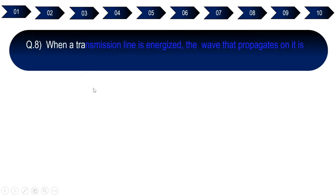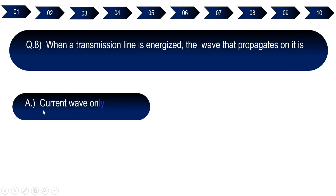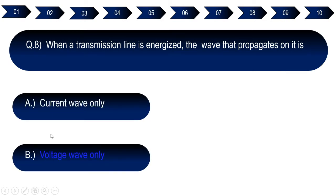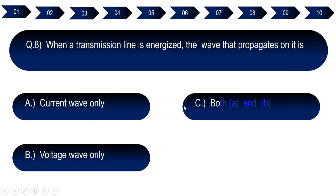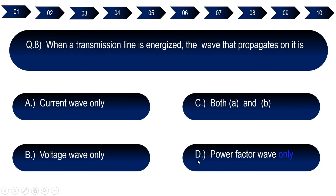Question number eight: When a transmission line is energized, the wave that propagates on it is. Option A: current wave only. Option B: voltage wave only. Option C: both A and B. Option D: power factor wave only. The right answer for question number eight is option C — both A and B, meaning both current wave and voltage wave.